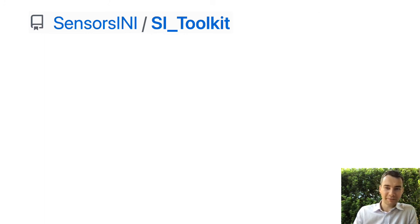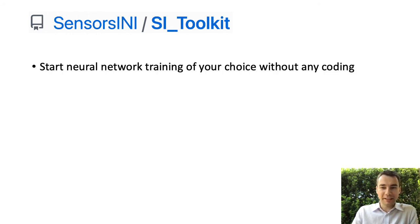As you can imagine, modeling system dynamics with RNN is usually not a one-hour task. To make it for you a one-hour task, we developed SI Toolkit, a set of scripts for system identification with neural networks. It is designed to let you start neural network training of your choice without any coding,